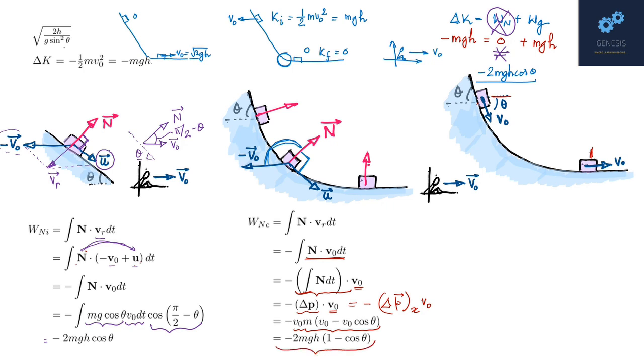So now the total work done by the normal is work done by normal on the inclined part plus work done by normal on the connecting curved part. Add these two, and the total work done comes out as minus 2mgh. Now see whether the work-energy theorem is satisfied. Work done by gravity is mgh. So Δk equals work done by normal plus work done by gravity. This was minus mgh, work done by normal is minus 2mgh, and work done by gravity is plus mgh. You can see now the LHS matches the RHS.